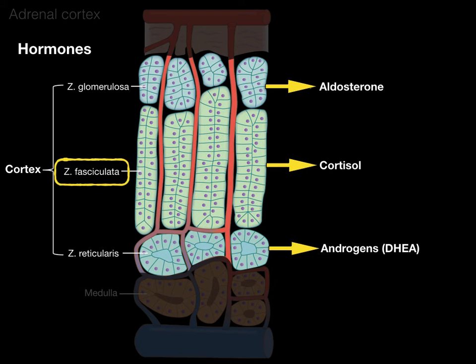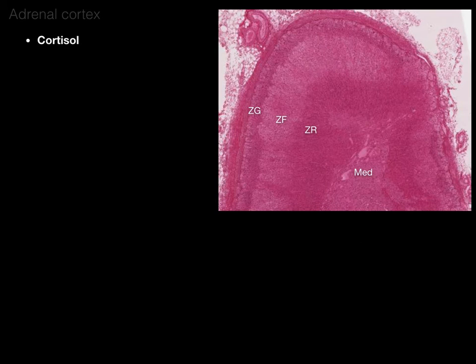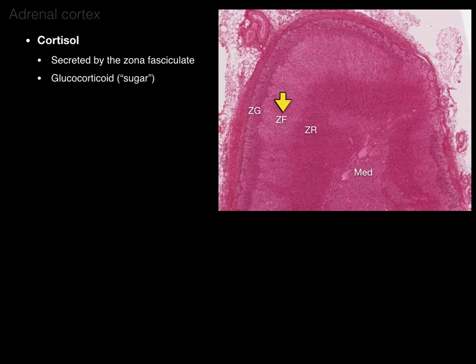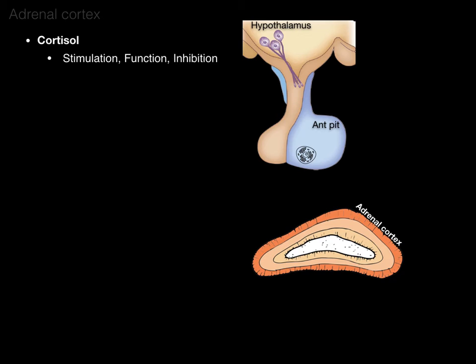Next, let's talk about the zona fasciculata and cortisol. Cortisol is secreted by the zona fasciculata. It is a glucocorticoid — gluco meaning sugar — and it helps regulate sugar among other things. Another way to think of it: this is the stress hormone. It is a steroid hormone, so it acts intracellularly. The hypothalamus initiates this process either through a stress response or as part of the regular circadian rhythm.